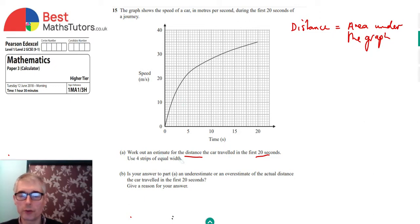What we're told to do is use a method where we split the area under the graph into four strips of equal width. So we're going to start by doing that. If it's 20, we're going to split it into four strips of equal width. Each strip is going to be a width of five seconds. So we can start here, just draw a line down and repeat that at 10 and at 15 and at 20.